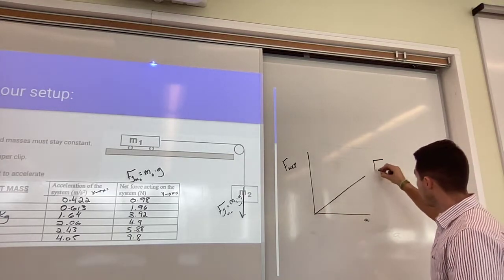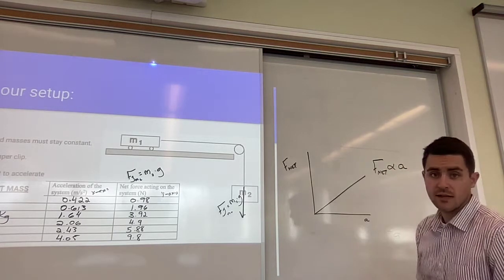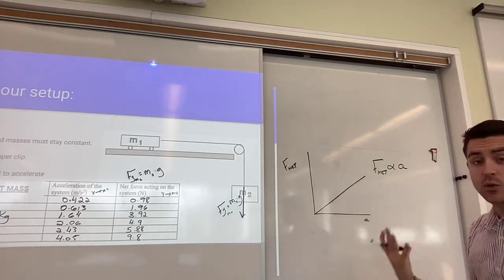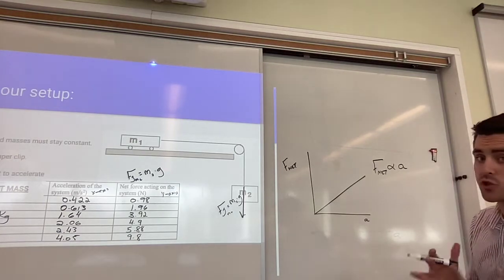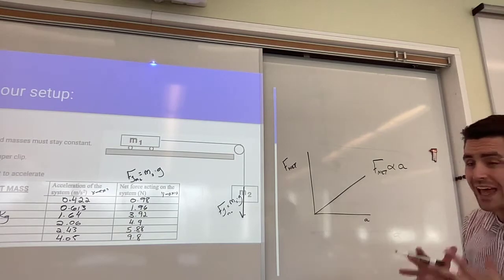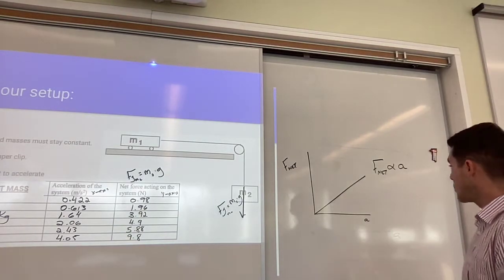This means that my proportional relationship, F net, is related to A. As forces get larger, accelerations get larger with them by the same factor. There's no square, there's no square root. As forces get larger, accelerations get equally larger.